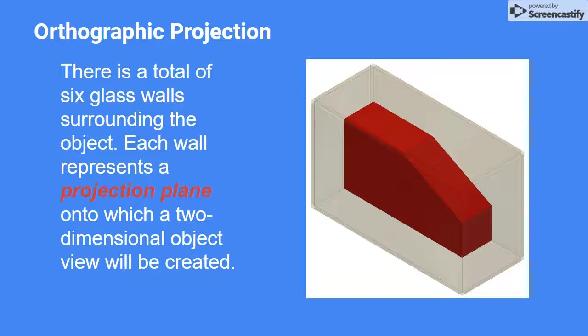If you imagine the object inside a glass box, you could trace the orthographic views of all six sides of the object onto each of the six sides of the box. If the box could then be unfolded and laid flat, you would have a complete orthographic drawing of the part in the correct orientation.